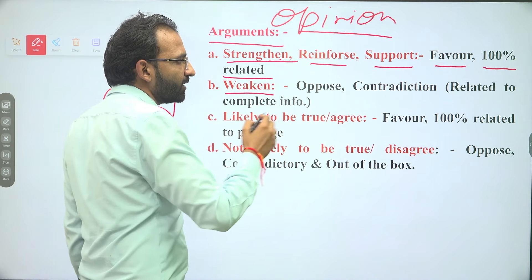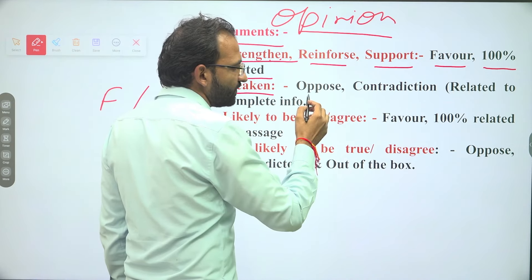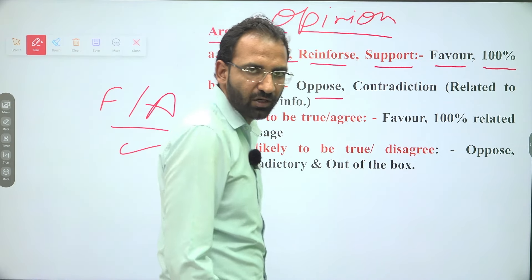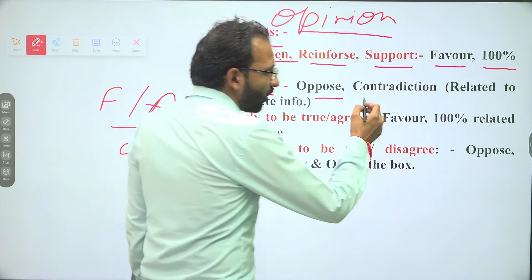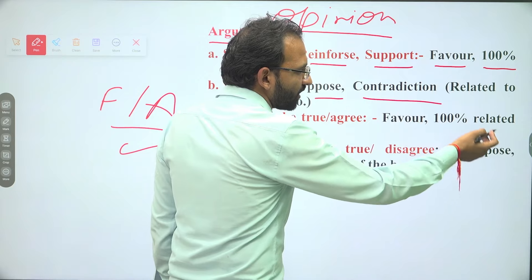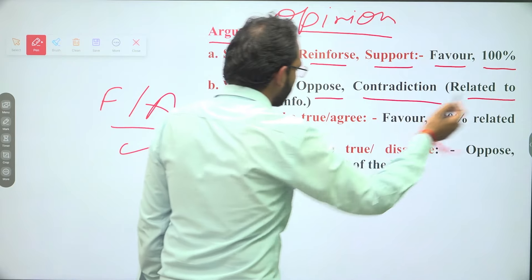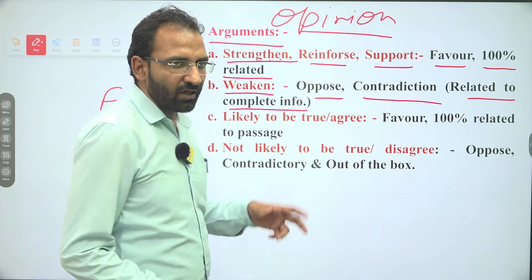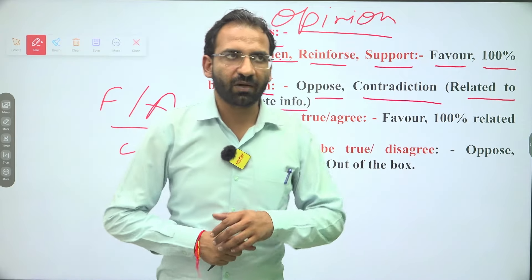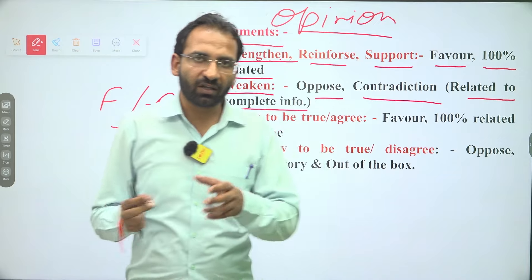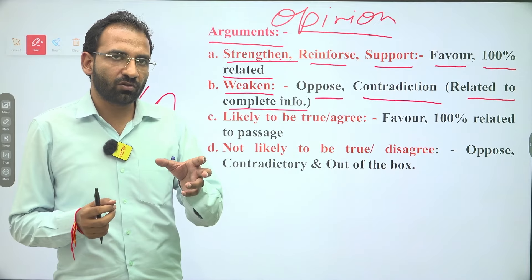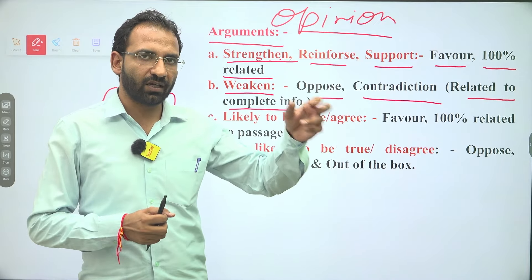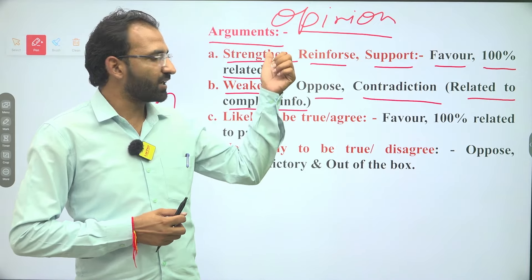Weakened means opposite, contradiction — related to the complete information. Weakened arguments are easy to identify in comparison to strengthened arguments. Why? Because either it will be opposite or it will be in contradiction, but it will be completely related to the passage.